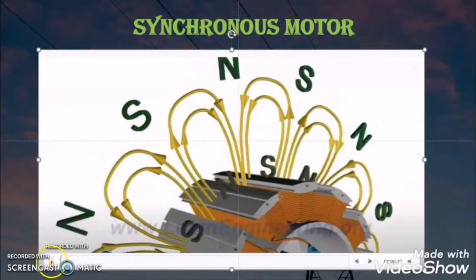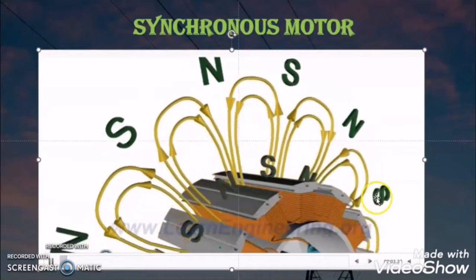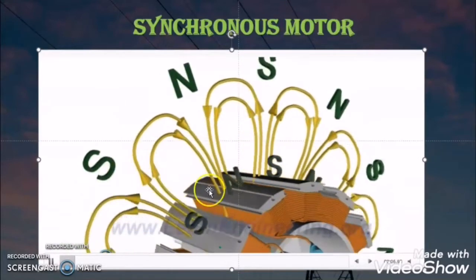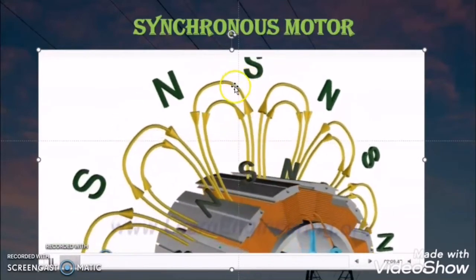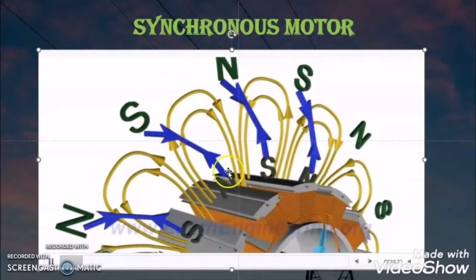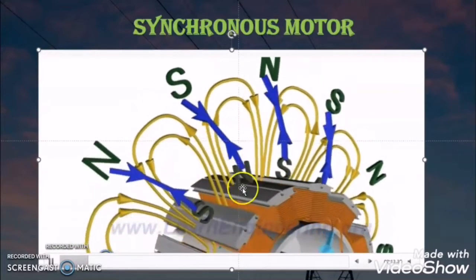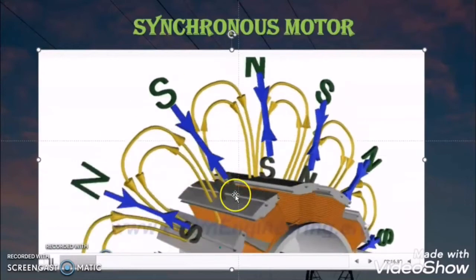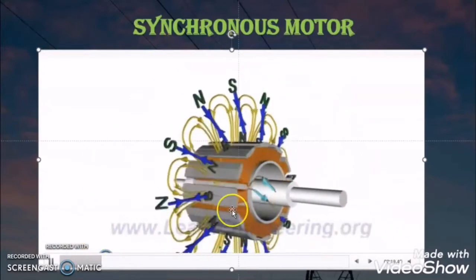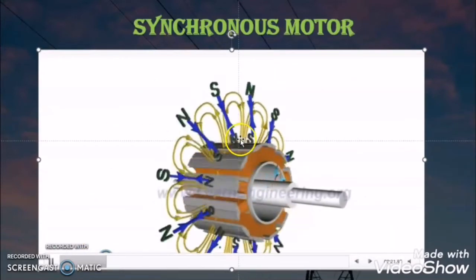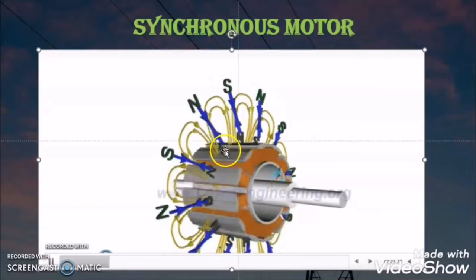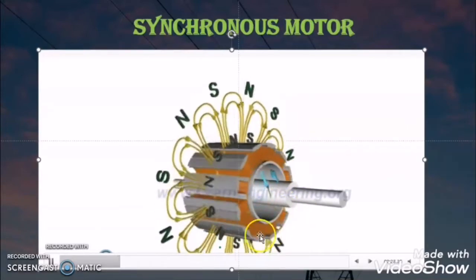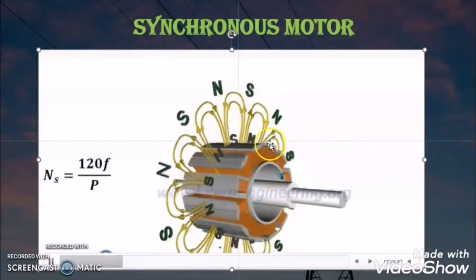The rotating magnetic field also has its own poles. At the time of starting, these two poles try to attract each other — south by north and north by south. There will be a magnetic locking between the rotor poles and the rotating magnetic field, and due to this, the rotor will start rotating with the speed of the rotating magnetic field, RMF.